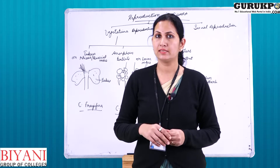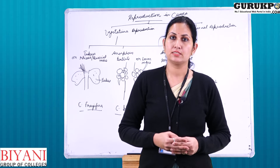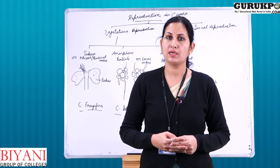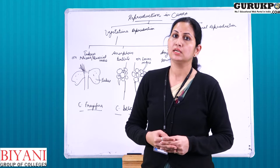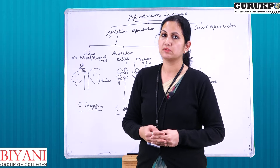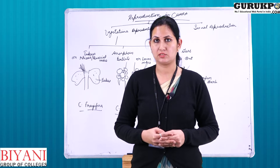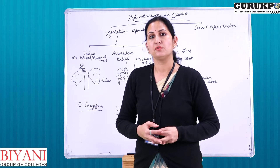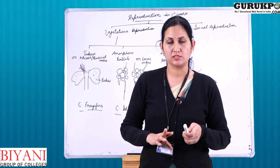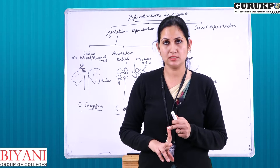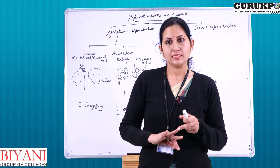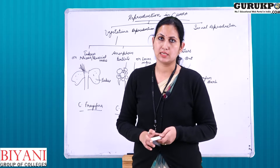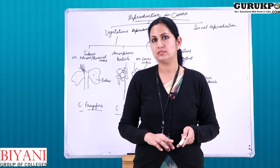Chara is algae, as we all know. It is a macroscopic one which can be seen with the naked eyes. In my previous video lecture we discussed about the structure of Chara. Now in this video lecture we are going to discuss about the different types of reproduction found in Chara. In Chara we can see two types of reproduction: vegetative reproduction and sexual reproduction. Asexual reproduction is absent in this.